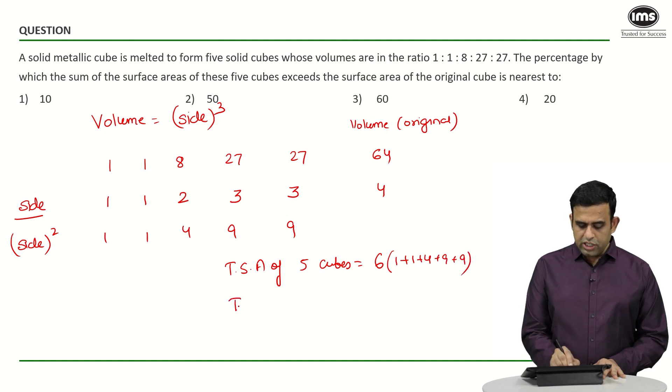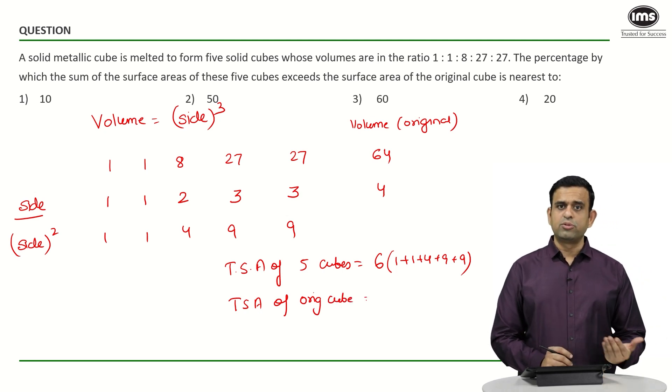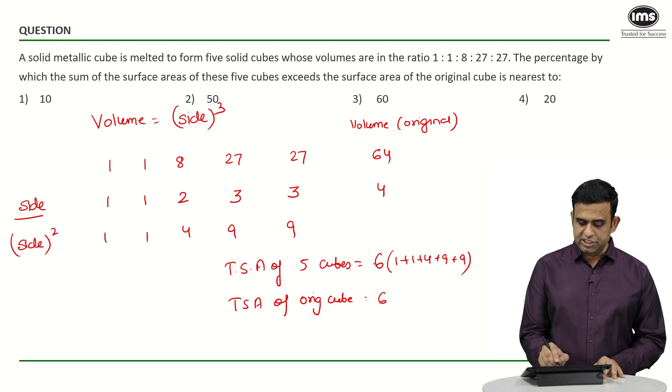What about the total surface area of the original cube? It's 6 times side squared, so 6 × 4² = 96.